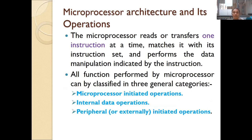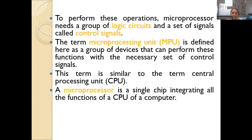The microprocessor reads only one instruction at a time, then matches the instruction with the instruction set and performs the manipulations indicated by it. The functions performed by the microprocessor can be classified into three categories: first, microprocessor-initiated operations; second, internal data operations; and third, peripheral or externally initiated operations. To perform these three operations, the microprocessor needs a group of logical circuits and a set of signals called control signals. The term microprocessing unit (MPU) refers to this group of devices.